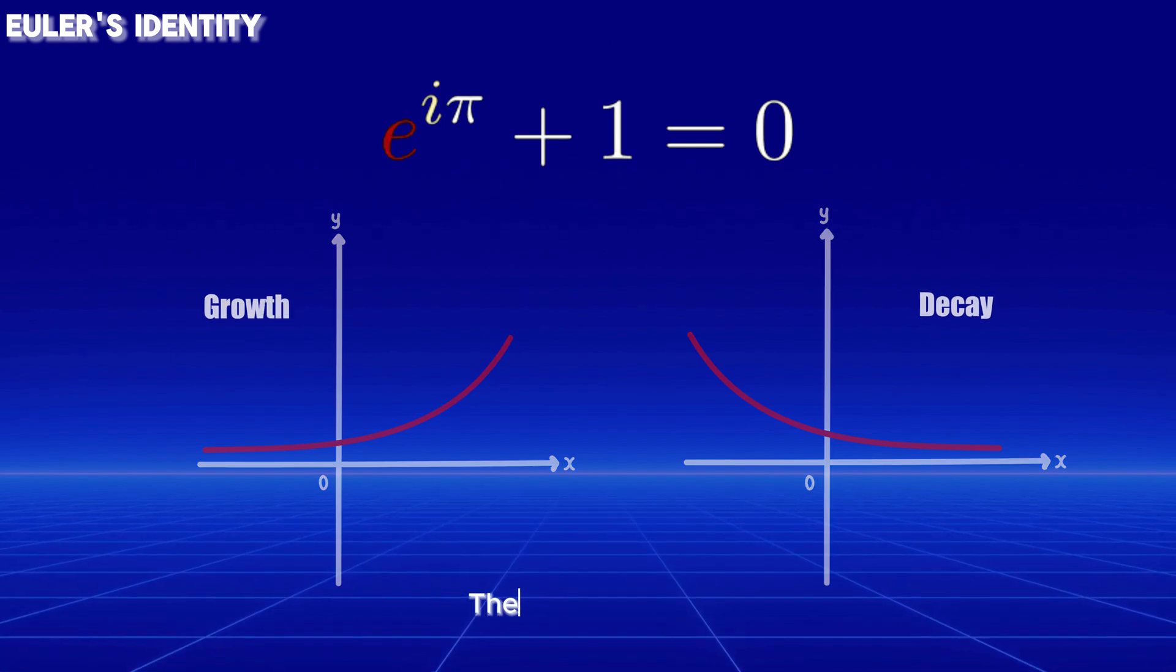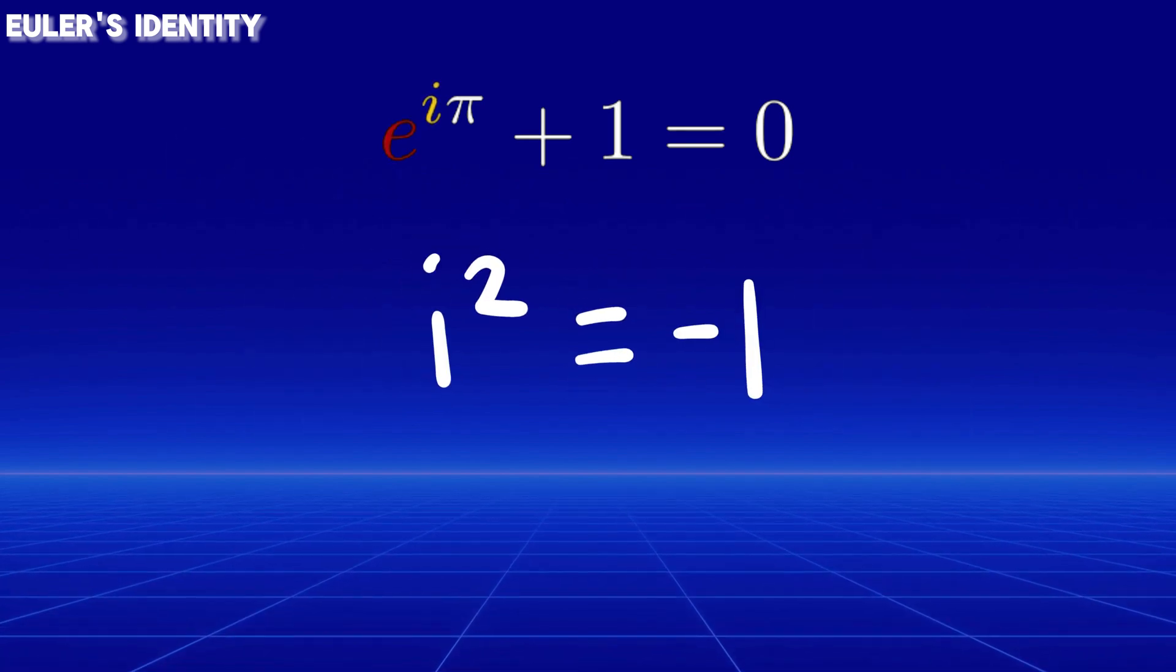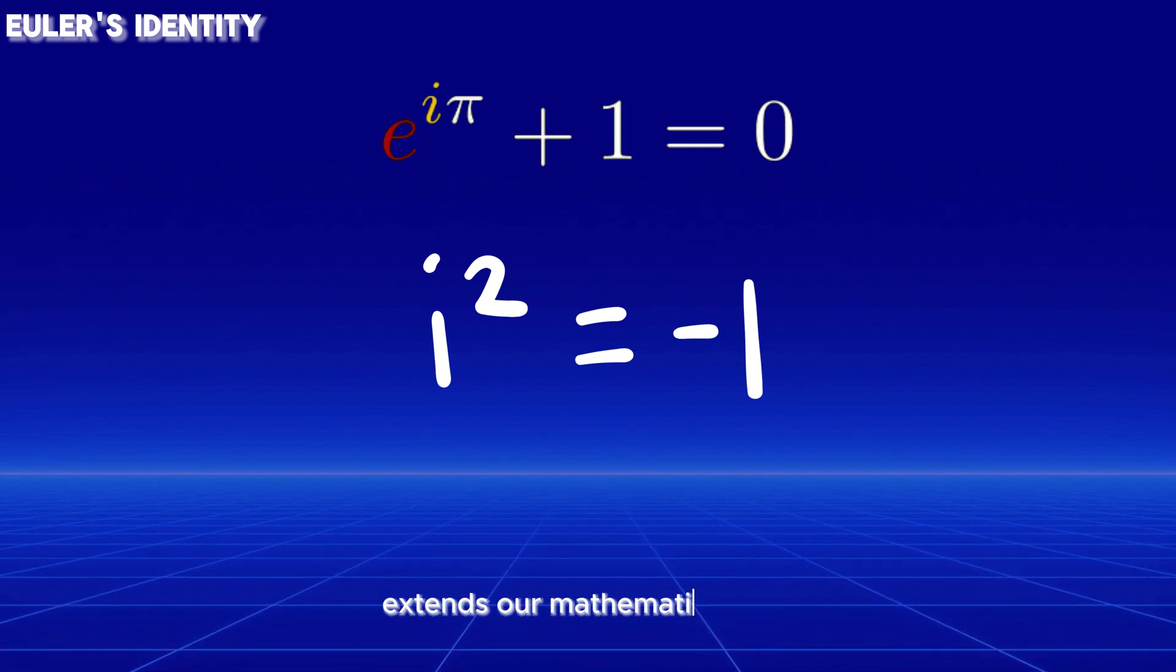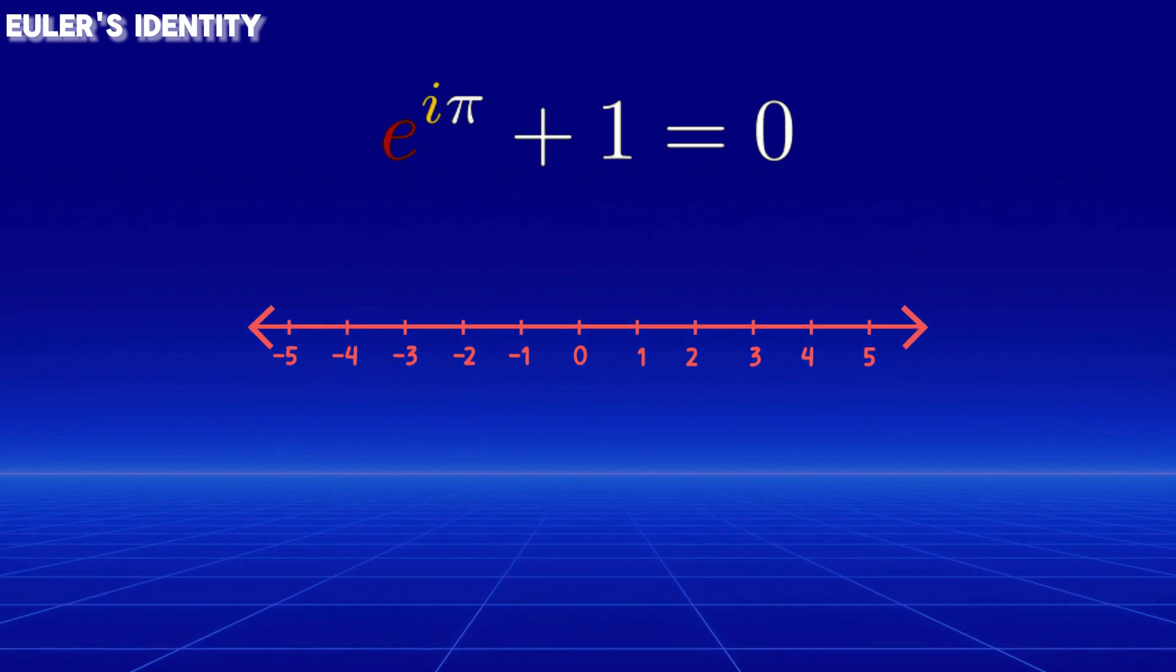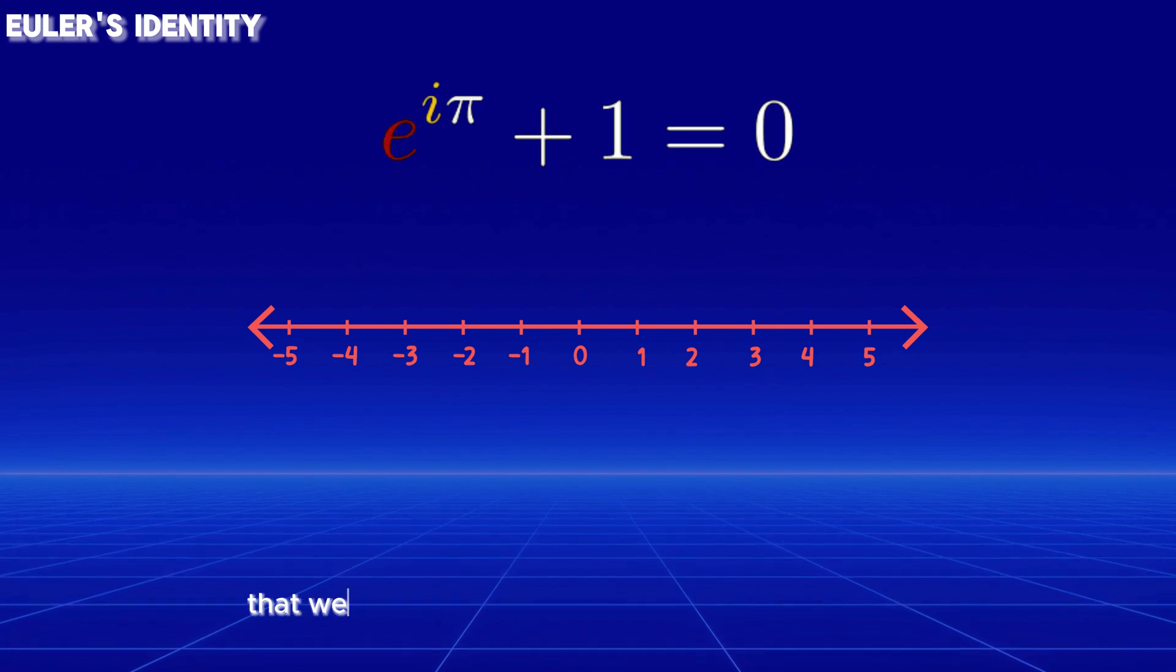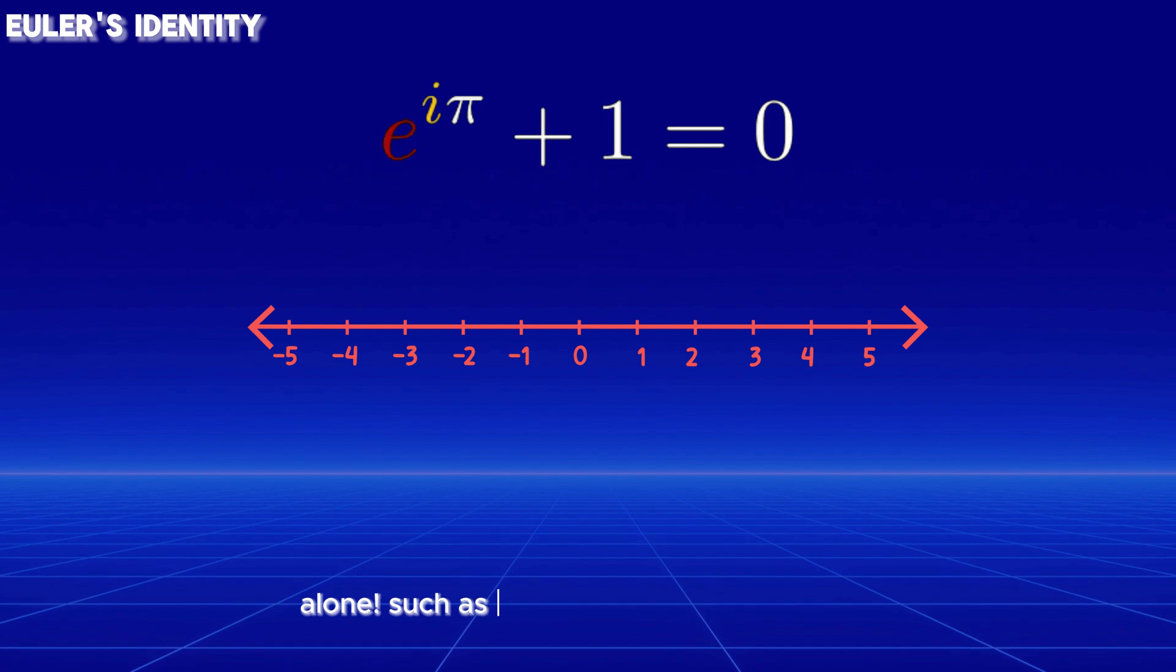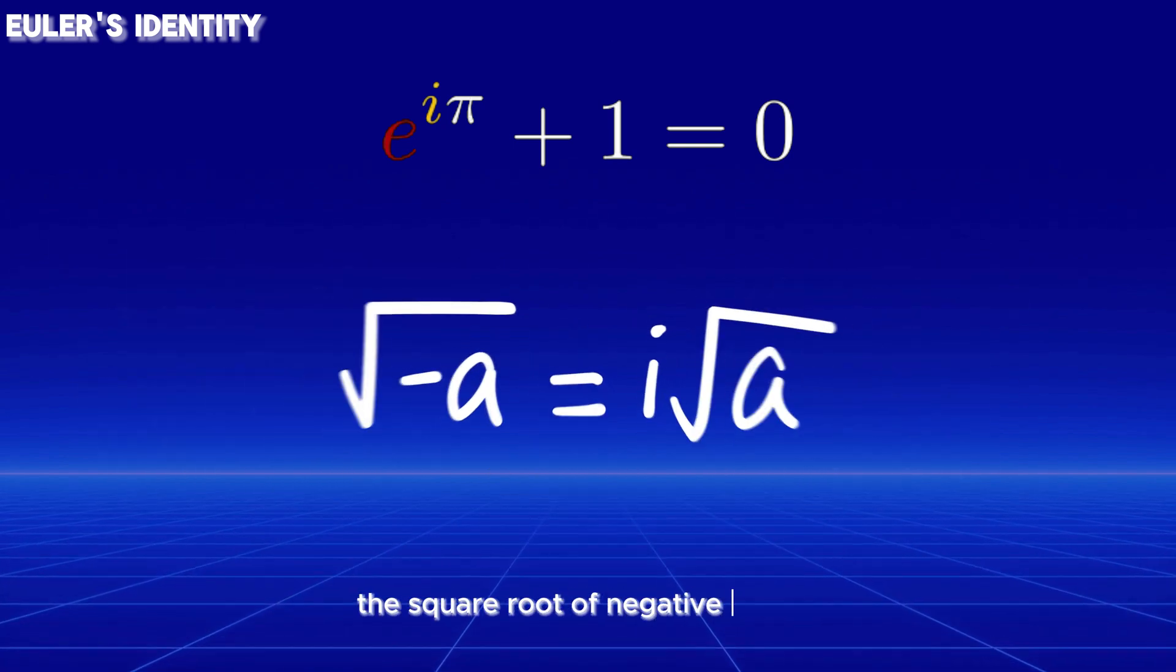Then, the imaginary unit, i, defined as i squared equals negative 1. This seemingly abstract number extends our mathematical toolkit beyond the real number line, playing a crucial role in solving various problems that we would not be able to solve with real numbers alone, such as problems where we encounter the square root of negative numbers.